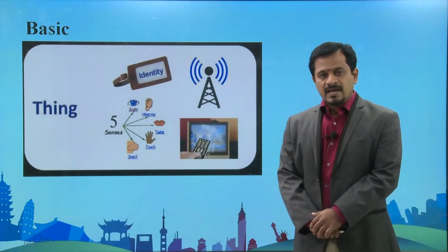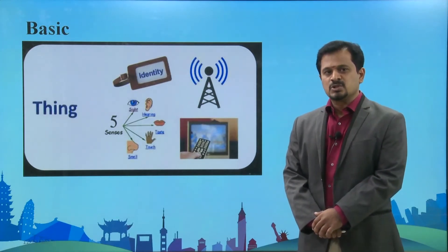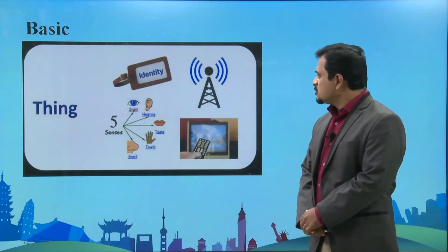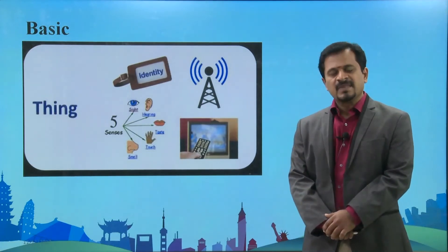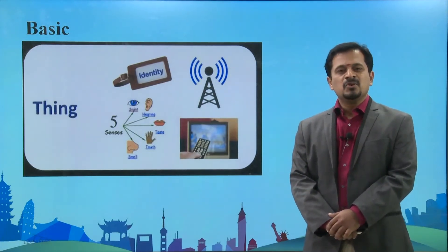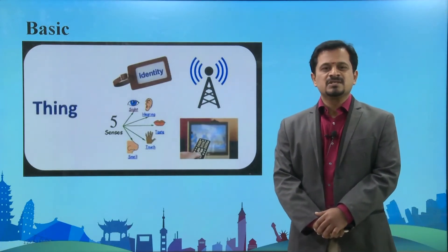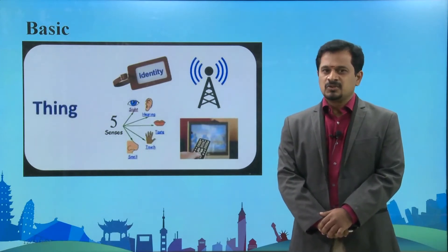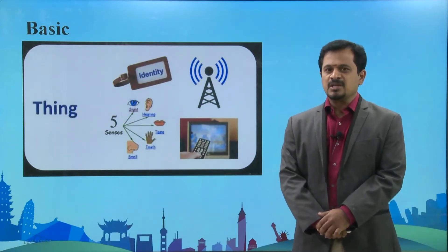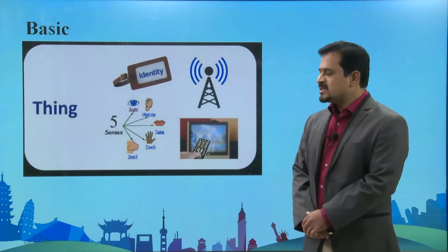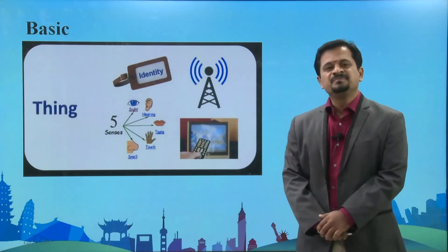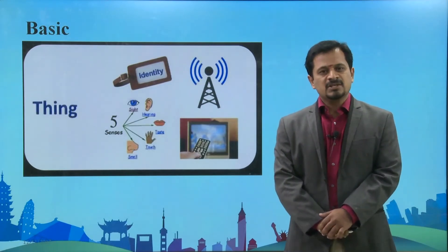Those informations are going to be transferred through the telecommunication infrastructure to reach the internet world. This is the basics. Next we are going to see how this is going to happen in the real world scenario and what are the major layers in Internet of Things.